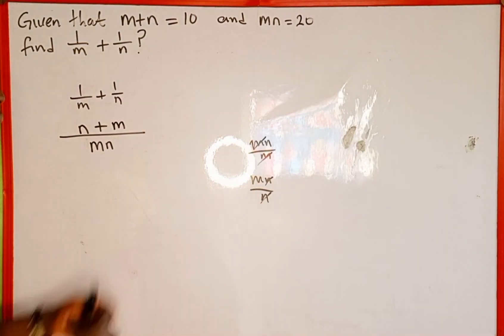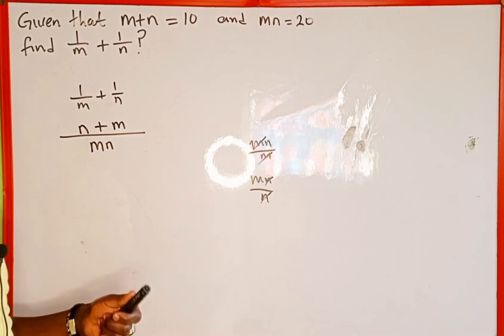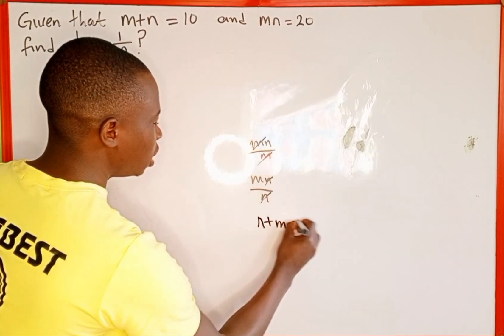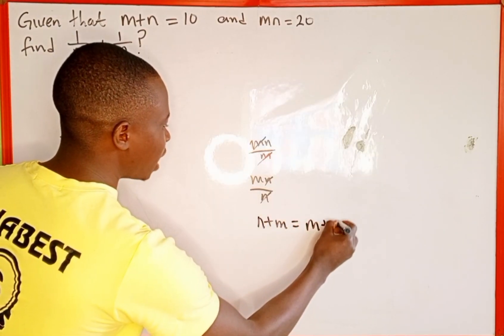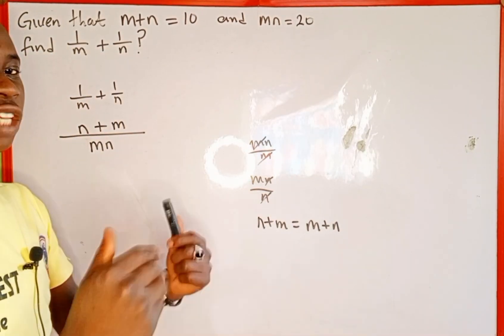Remember, addition is commutative. n plus m is the same as m plus n. For example, 2 plus 5 is the same as 5 plus 2.